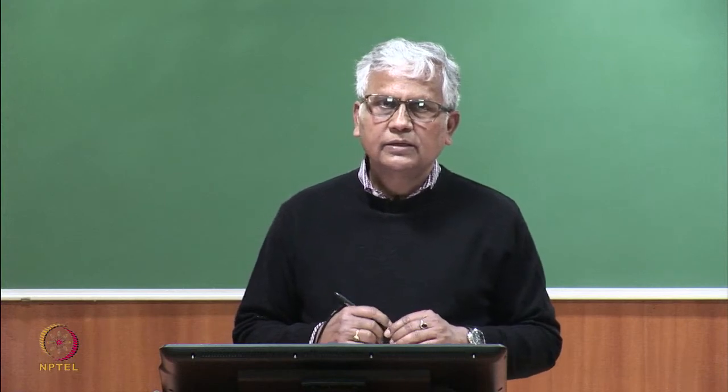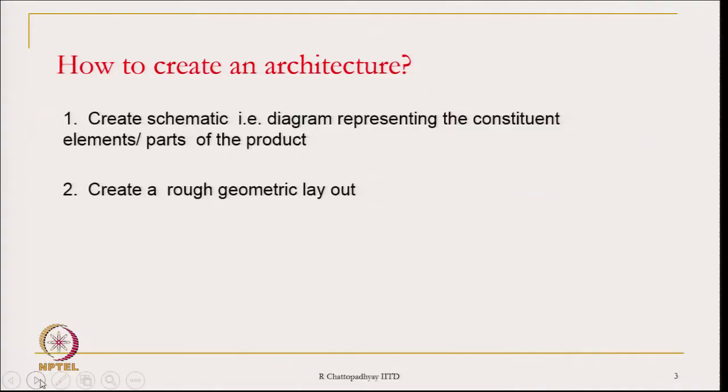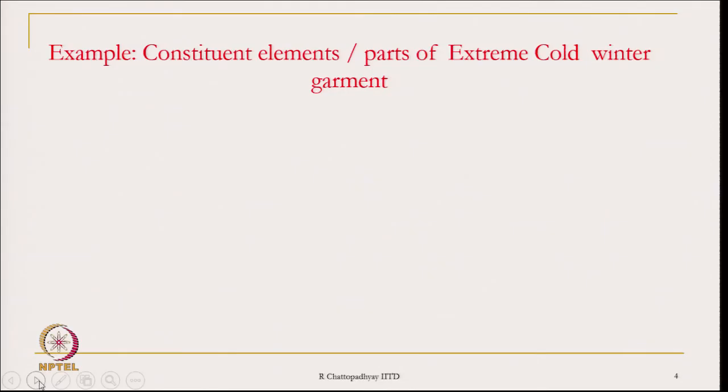Once we draw the different parts or elements of the product, we create a rough geometrical layout — that is, how the different parts are going to be laid out and joined together to create a complete product. We draw the different constituent elements or parts and then arrange them. This is how architecture can be built.